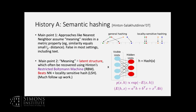The second point was that in most settings, meaning corresponds to latent structure, which they proposed can be recovered using Hinton's restricted Boltzmann machine — something like a simple one-layer neural net. They showed experimentally that it beats nearest neighbor with locality-sensitive hashing. The RBM has visible units where you input the data and hidden units. The joint distribution of hidden and visible units is expressed using an energy function like an Ising model, but it's bipartite — all interactions are between visible and hidden, none within.